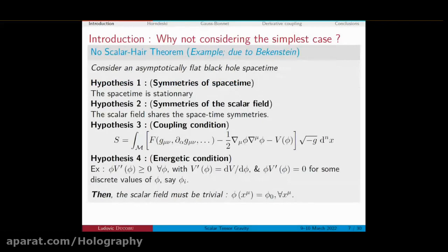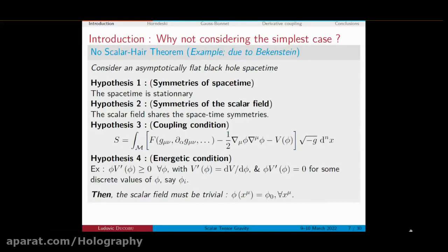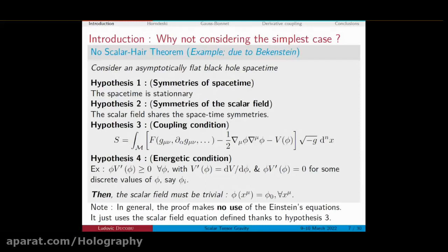To answer why not just look at the simplest case of a theory with a minimally coupled scalar field: there is an example of a no-scalar-hair theorem due to Bekenstein that tells you precisely that under those hypotheses, you may only have a trivial scalar field. This applies to asymptotically flat and stationary spacetimes, with a scalar field that has the same symmetries as your spacetime, a minimal coupling condition, plus some conditions on the potential. What is interesting is that this theorem is quite unrestricting regarding your gravity sector, as the proof makes no use of Einstein's equation — it just uses the scalar field equation.